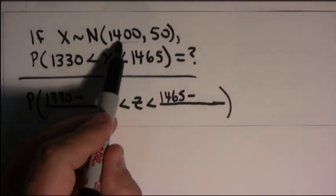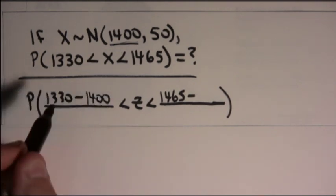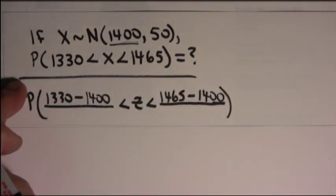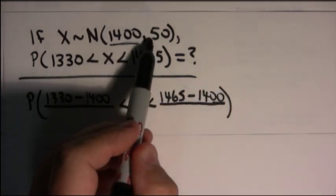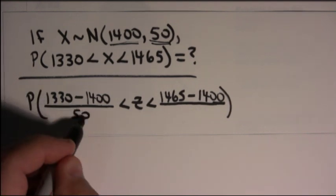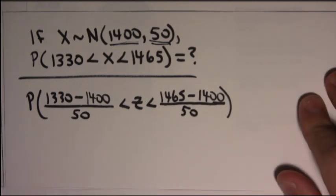So, you find, you know the mean is 1400. So, you subtract off the mean. You've got to do it on both sides because you've got a between. And then, you divide by the standard deviation. The standard deviation is 50. So, you divide by 50.